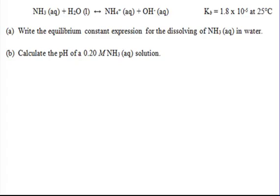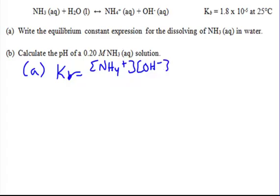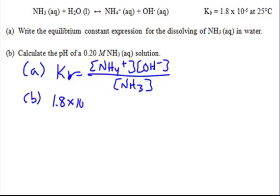Now I'm going to show you a weak base problem — a Kb problem. This is ammonia. First we write our equilibrium expression: Kb equals the conjugate acid times hydroxide on top, over the concentration of ammonia. We know Kb is 1.8 times 10 to the negative 5th — they gave us K, so we're solving for concentration. Ammonia, 0.20 molar, goes on the bottom, and X times X — X squared — goes on top.